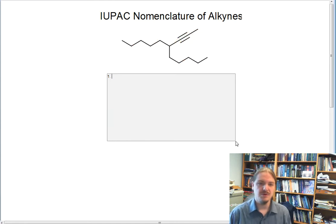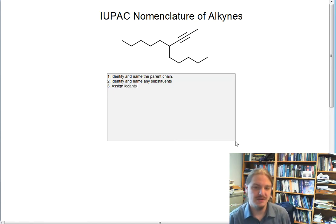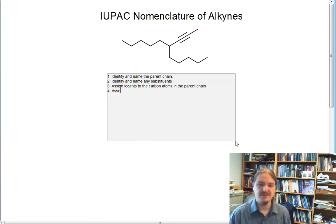Well, we're going to want to follow the same kinds of processes that we've used for naming other molecules with the IUPAC nomenclature. First, we're going to want to identify and name the parent chain. Then we're going to want to identify and name any substituents. In three, we're going to want to assign locants, and those are the numbers that indicate where everything is, to the carbon atoms in the parent chain. And finally, we're going to want to assemble the name.